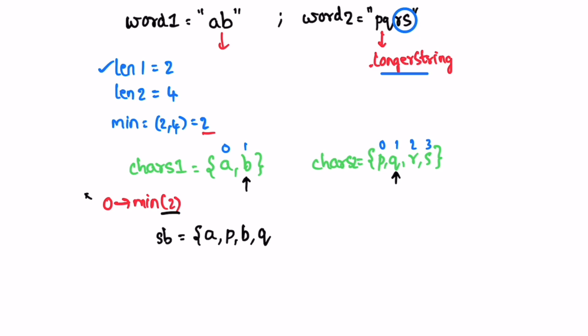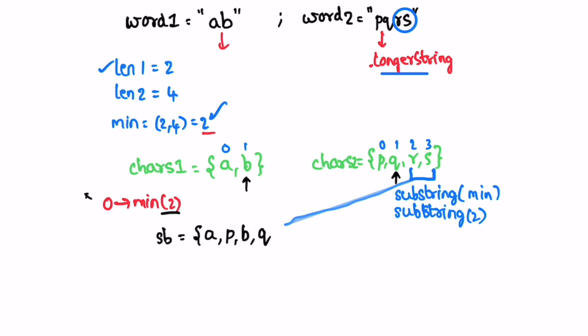Now we extract the remaining characters from the longer string. We know min is two, so from the longer string we take a substring starting at index min — there's no need to specify an ending index, so it takes the substring to the end of the string. That gives us 'r' and 's', which we append to the result. Now we have our final answer in the StringBuilder. Converting it to a string using toString gives us the final output, which matches the expected output.